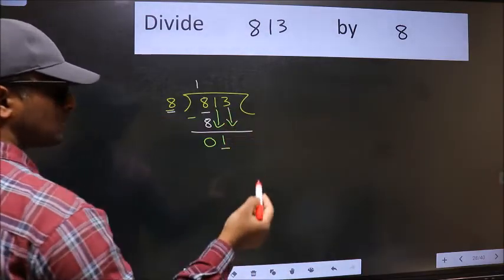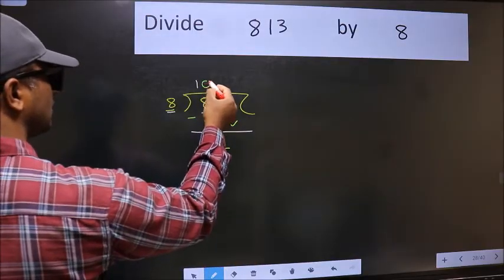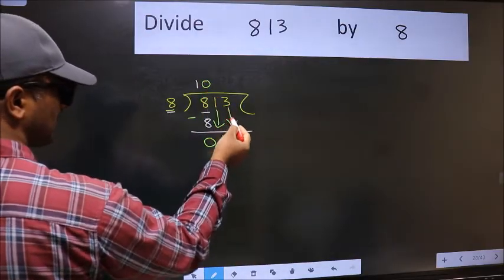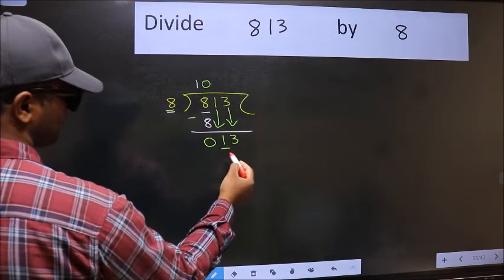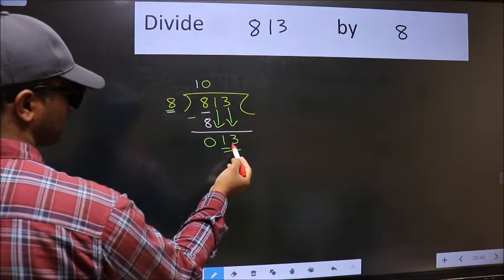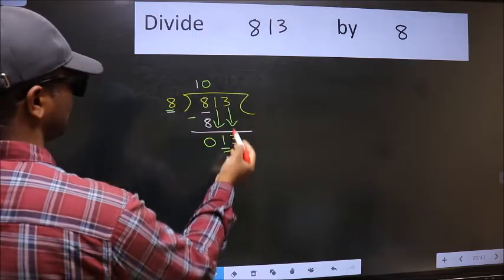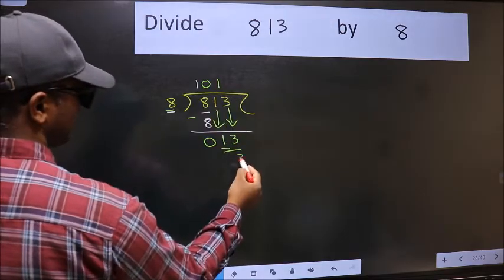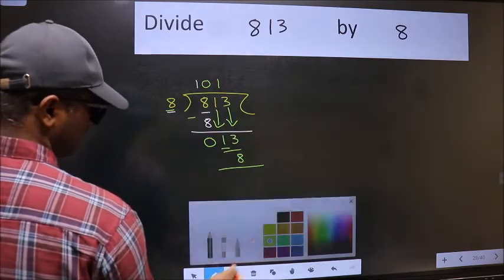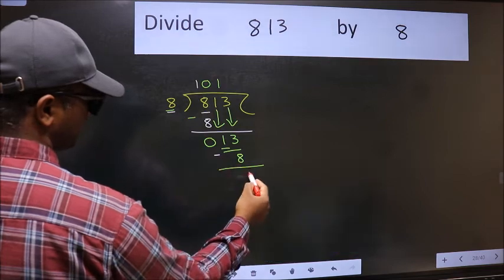And the rule to bring down the second number is we should put 0 here. Then only we can bring this number down. Now 13. A number close to 13 in 8 table is 8 once 8. Now we should subtract. We get 5.